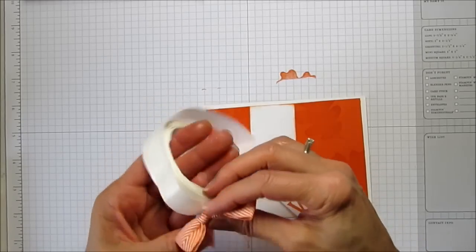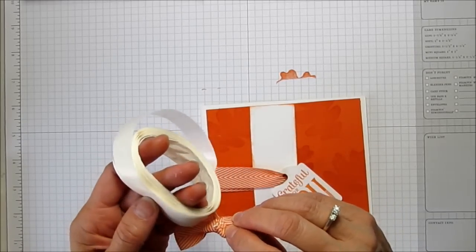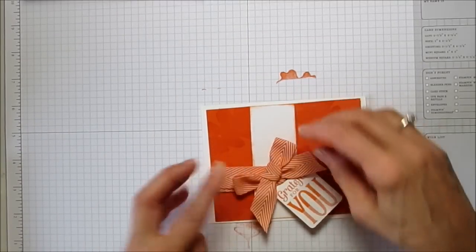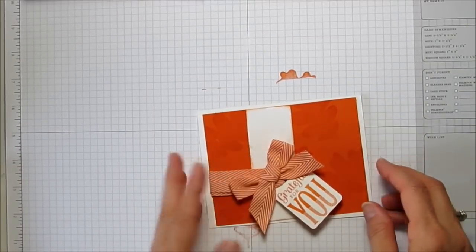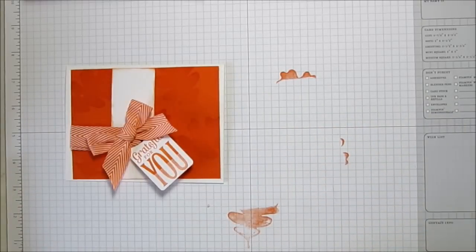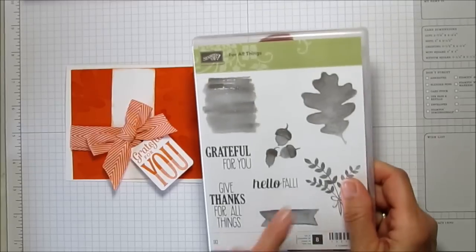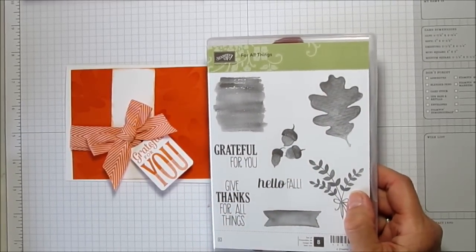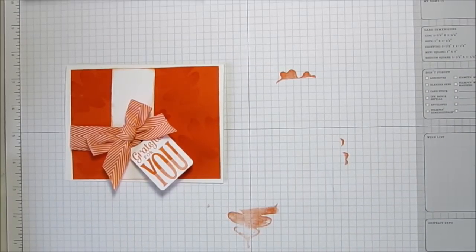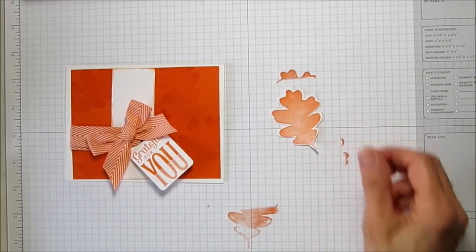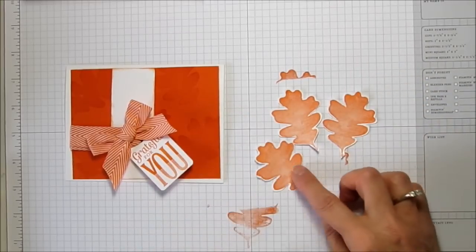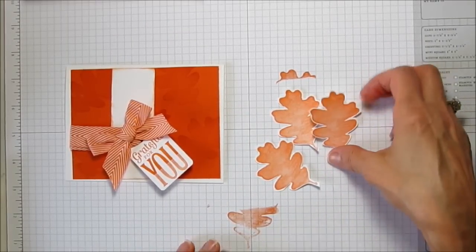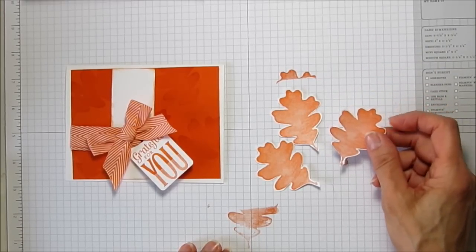Now the next thing I did was I stamped the large leaf again from For All Things. This is the set I'm using and I stamped it three times and I fussy cut three leaves out. Actually I wanted to leave a little bit of white on the edge, so this went really quick. It doesn't take any time at all. We don't have a punch for this one.